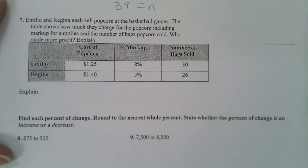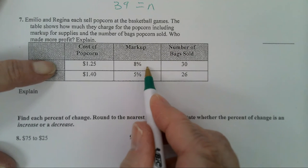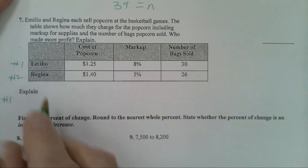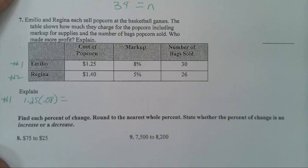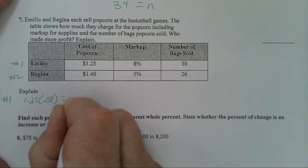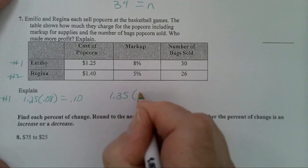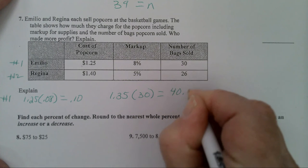Let's go on to the next one. These two people each sell popcorn at the basketball games. The table shows how much they charge for the popcorn, including markup for supplies, and the number of bags popcorn sold. Who made more of a profit? And explain. Okay, so the cost of popcorn, $1.25. This person's going to mark it up 8%. So I'm going to call this one number 1, and this one's number 2. I'll do number 1 in green. So $1.25 times 0.08, they're going to add $0.10 to their popcorn, which is not a whole lot to mark it up. So their popcorn is $1.35. How many bags did they sell? 30. So $1.35 times 30 will give you, they made $40.50.